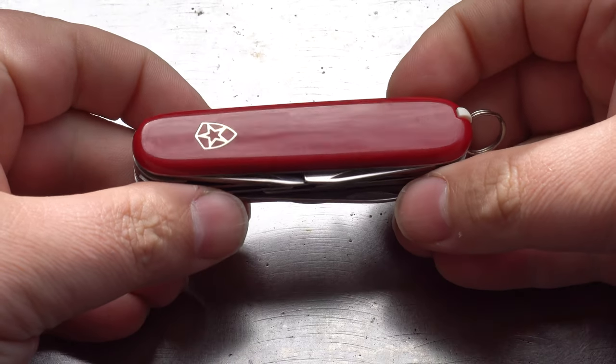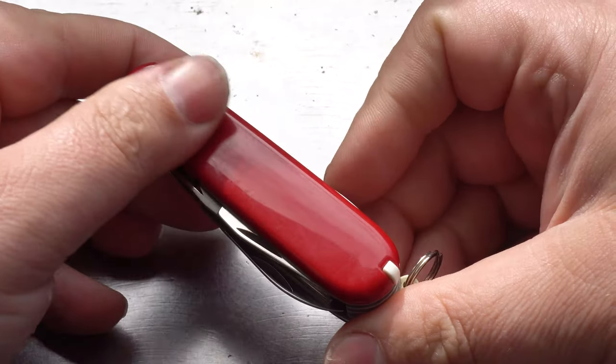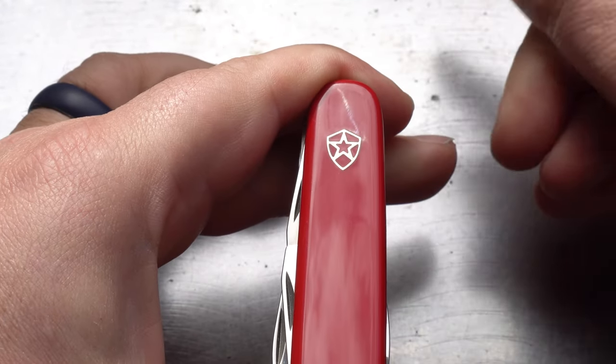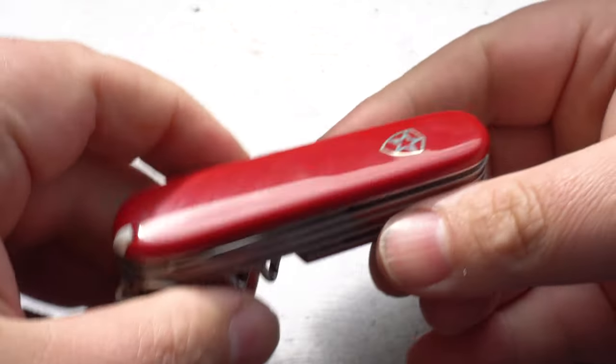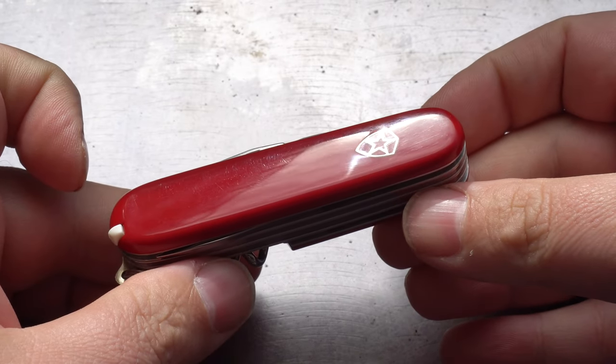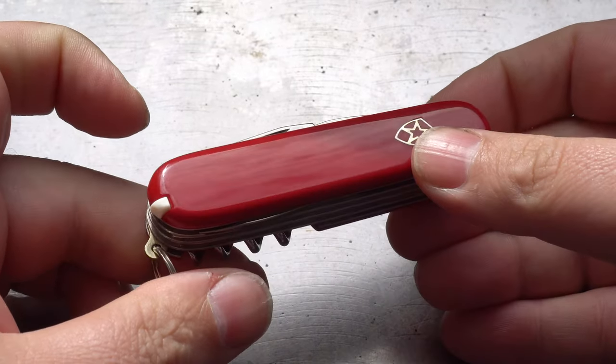The first thing you notice, it looks exactly like a Victorinox. No surprise here, it's probably out of every single multi-tool I've got, this is probably the closest thing to a Victorinox copy that I've ever seen. This model here has exactly the same tool outlay as the Victorinox Huntsman, less the utility hook.